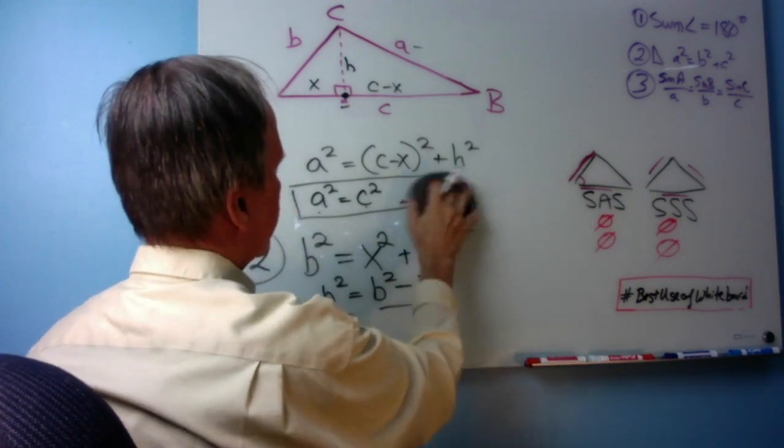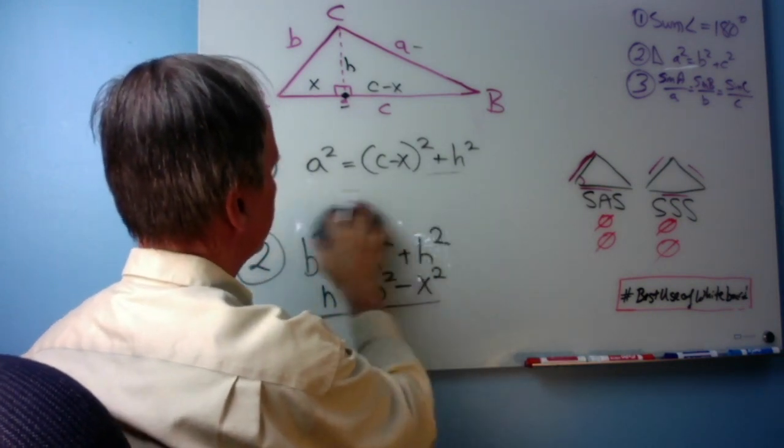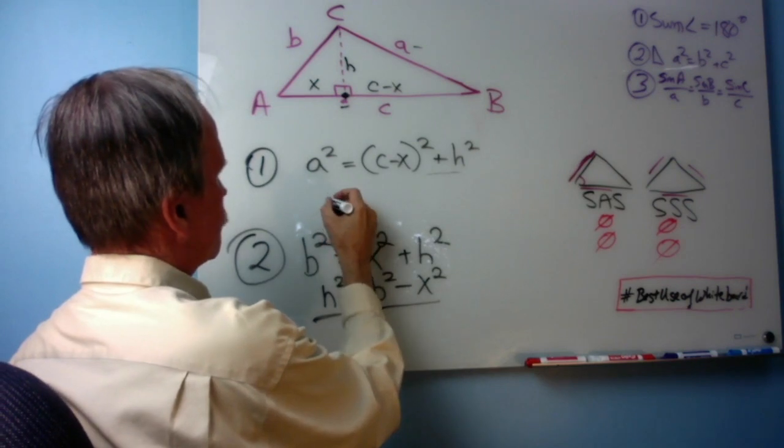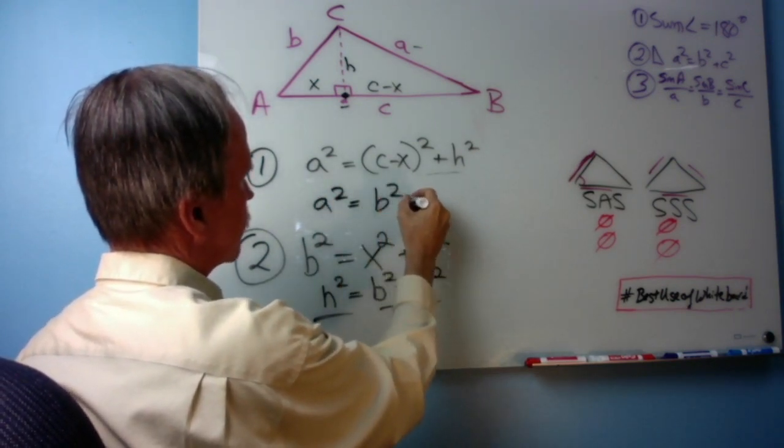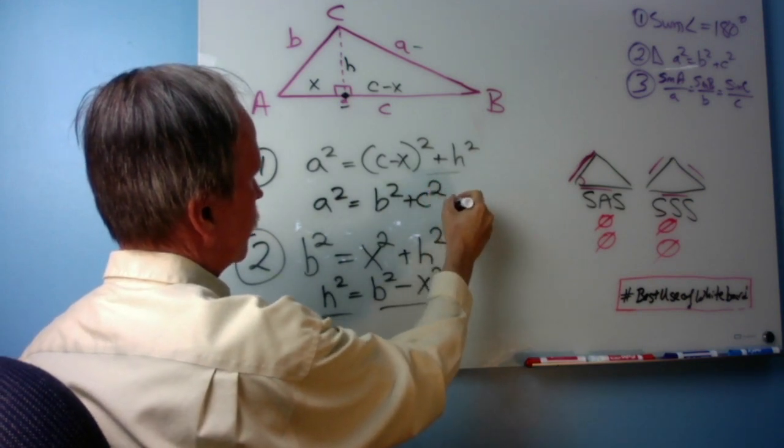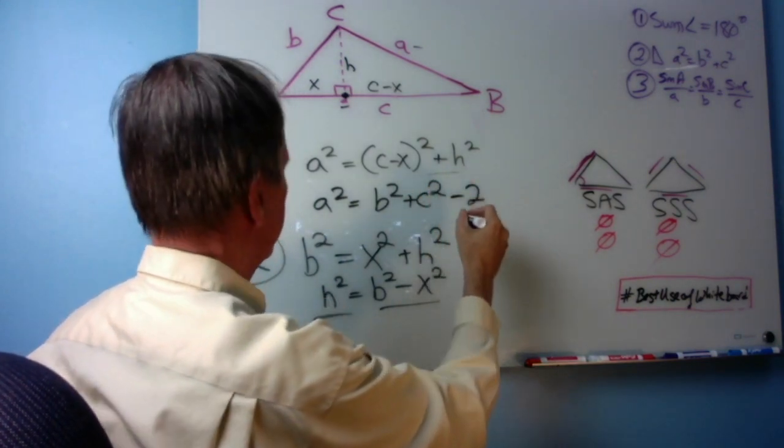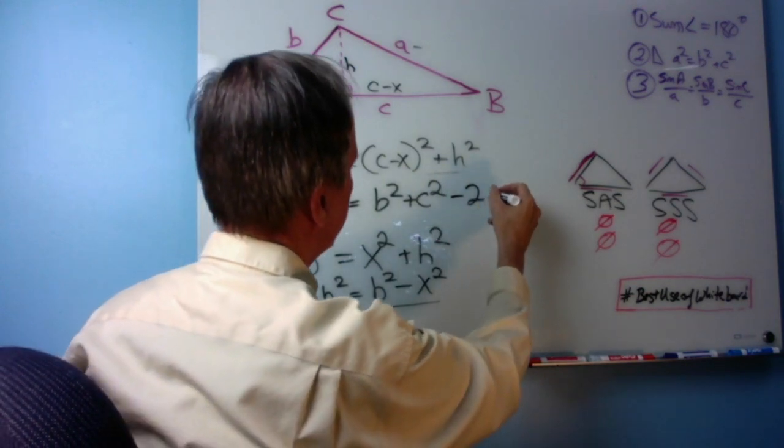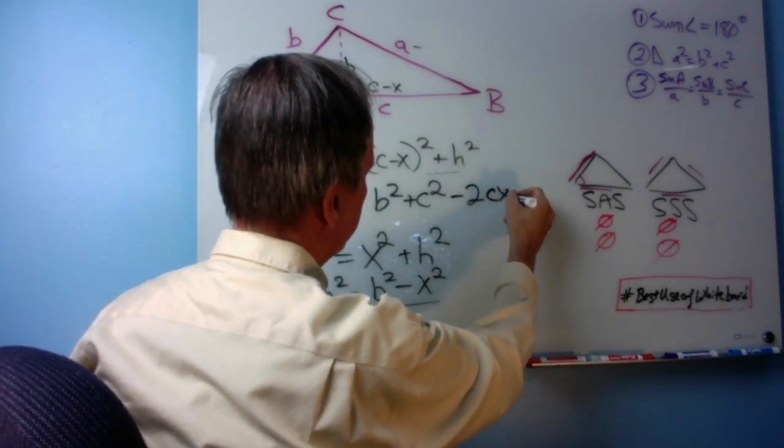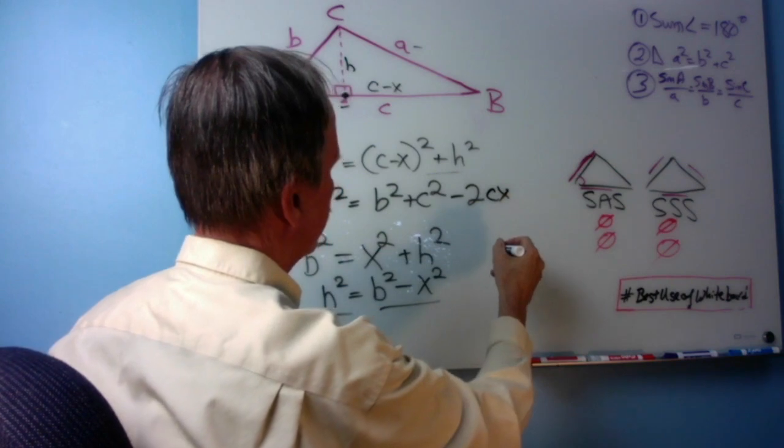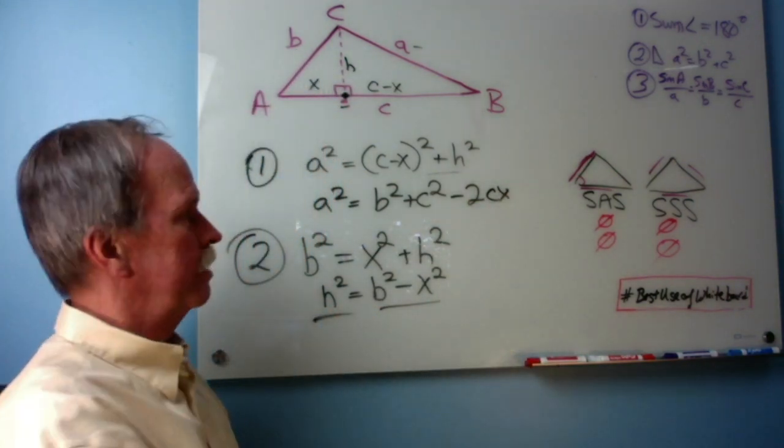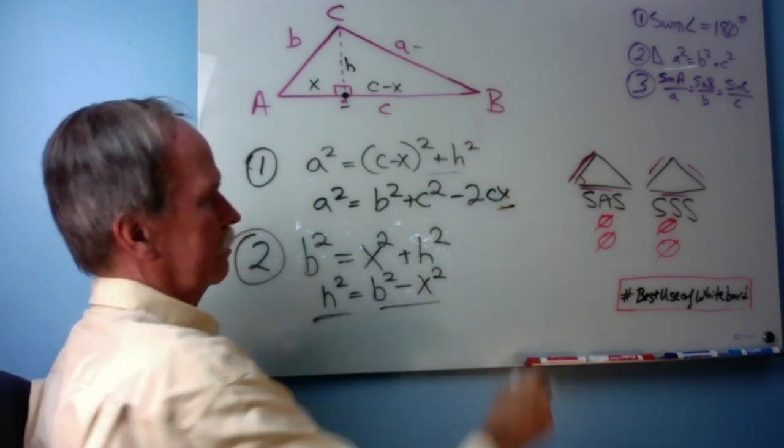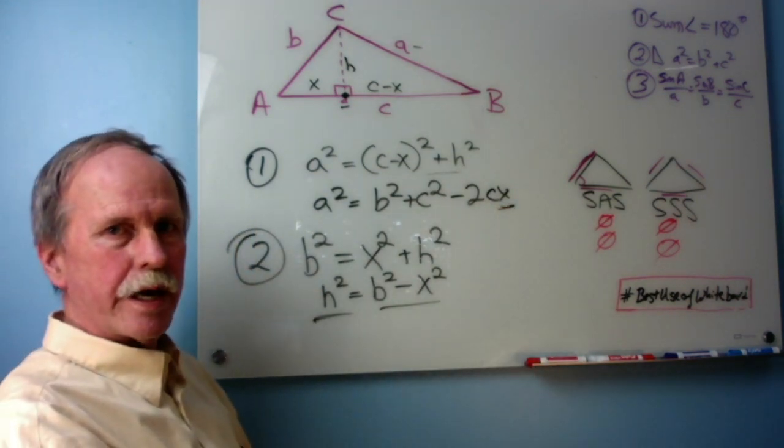Okay? I'm going to take it down for just a second. But A squared equals B squared plus C squared minus 2CX. And that was it. And there we go. That's a lot cleaner, isn't it? But I still have this X in here. How am I going to get rid of the X?